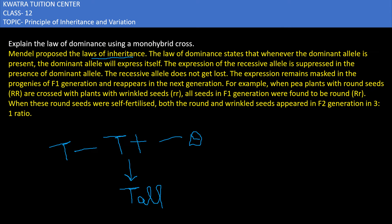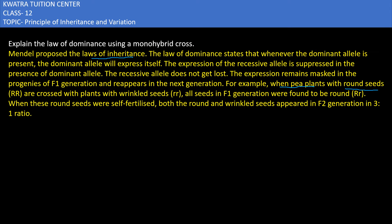Now for the monohybrid cross part. We have an example where a pea plant with round seeds has the genotype capital R and capital R. If we cross this with a plant with wrinkled seeds, which has the genotype small r and small r, then in the F1 generation all the seeds will be round.